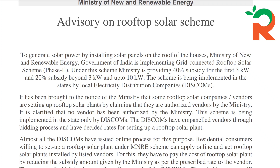The Ministry of New and Renewable Energy, Government of India, is implementing grid-connected rooftop solar scheme phase 2. Under this scheme, the Ministry is providing 40% subsidy for the first 3 kilowatt and 20% subsidy beyond 3 kilowatt and up to 10 kilowatt. This scheme is being implemented in the states by local electricity distribution companies — DISCOMS. Our consideration here is KACBN.